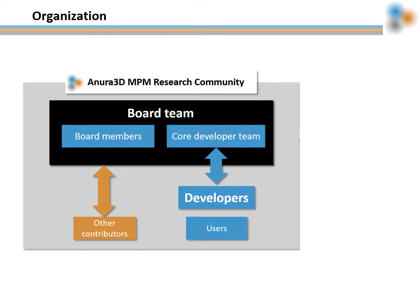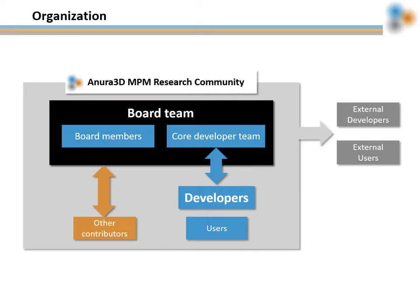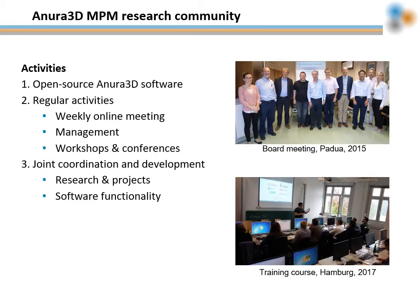Other contributors are members of the Anura3D community that do not directly contribute to the code. Since 2021, the Anura3D software is an open source code, so we also have a growing community of external users and developers. This group of people can also contribute back to the Anura3D community by developing new features, suggesting improvements, reporting bugs, new applications, or validations. Apart from the development and maintenance of the open source software, the research community also organizes regular activities including workshops and conferences, with active collaboration among members through research projects and common software functionalities.